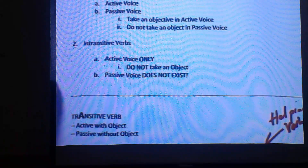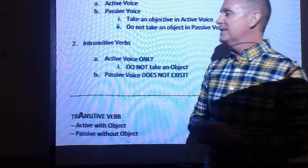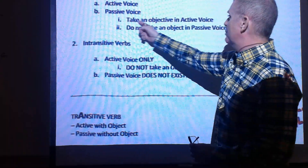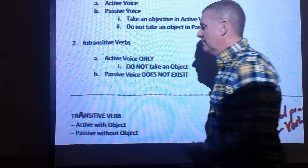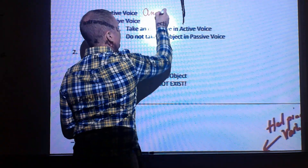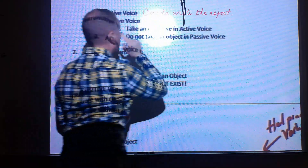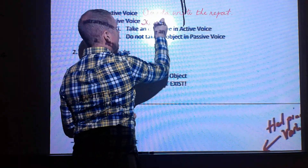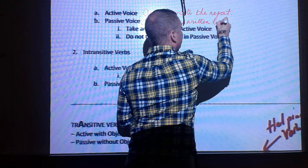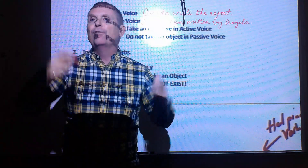To understand lie and lay, you must know the difference between transitive and intransitive verbs. Transitive verbs have both active and passive voice — in active voice they take an object; in passive voice they do not. Example: Active voice: 'Angela wrote the report' — 'report' is the direct object. Passive voice: 'The report was written by Angela' — 'by Angela' is a prepositional phrase.